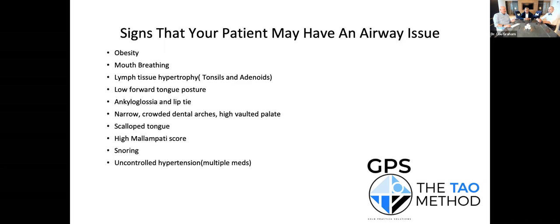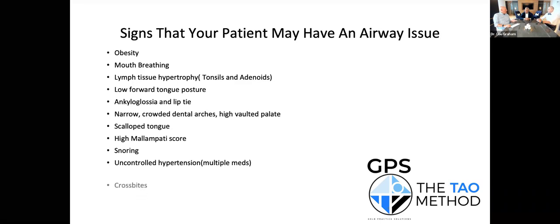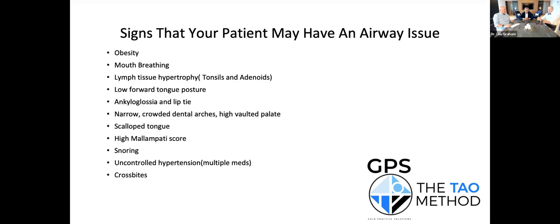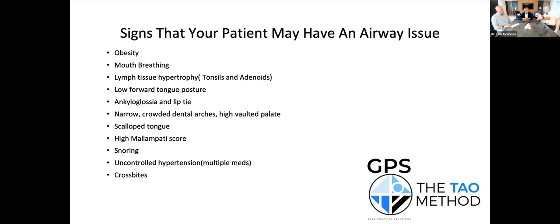Obvious snoring, uncontrolled hypertension — I'm getting referrals from cardiologists for arrhythmias and for sleep apnea. Crossbite is a huge indicator — Lane calls it an X-bite. Does someone have a large tongue? It's not that they have a large tongue; there's just not enough room for it. Lower molar inclination is another important factor. Once you know about these signs, you can never unsee them in your practice.